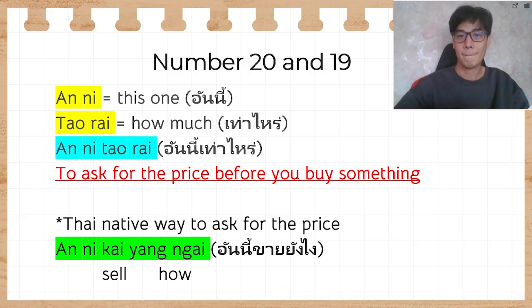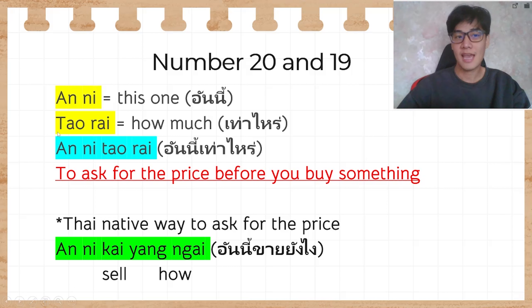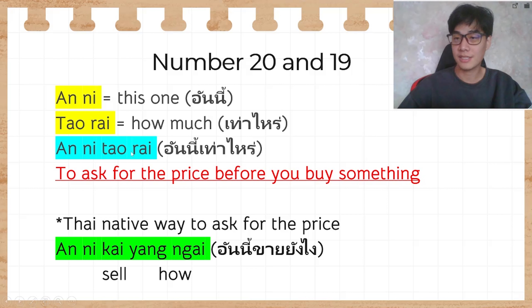Starting with phrases number 20 and 19: อันนี้ and เท่าไหร่. อันนี้ means 'this one' and เท่าไหร่ means 'how much,' so อันนี้เท่าไหร่ means 'how much is it?' You can use this phrase to ask for the price before you buy something.